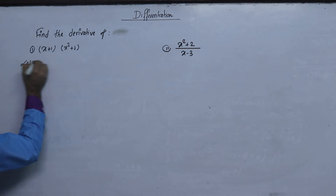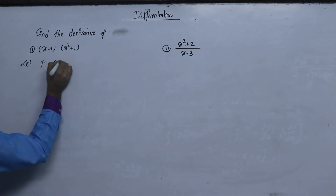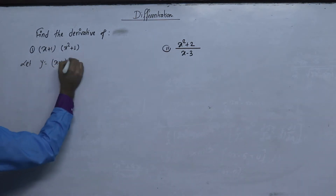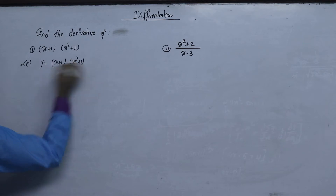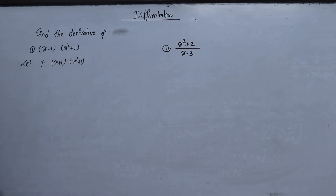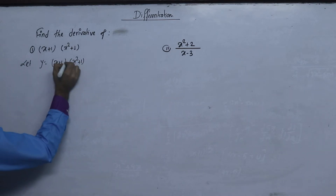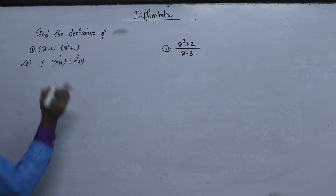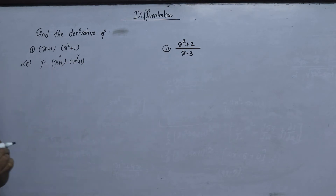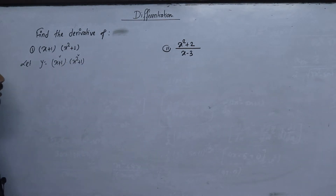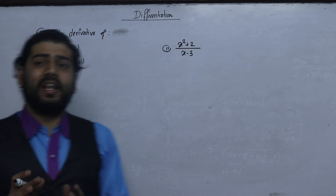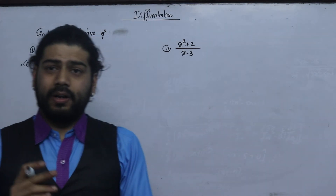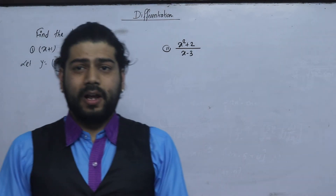Let y equals to (x plus 1)(x squared plus 1). If we write a derivative, it's called the product rule. We are going to write what it is — this is the product rule.